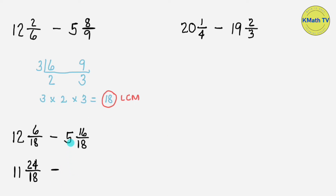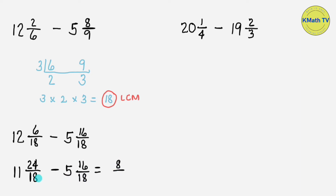Let's subtract now. Copy the subtrahend: 5 and 16 eighteenths. Subtract the fractions by subtracting the numerators: 24 minus 16 equals 8, and copy the common denominator 18. Then subtract the whole numbers: 11 minus 5 equals 6. The answer is 6 and 8 eighteenths.